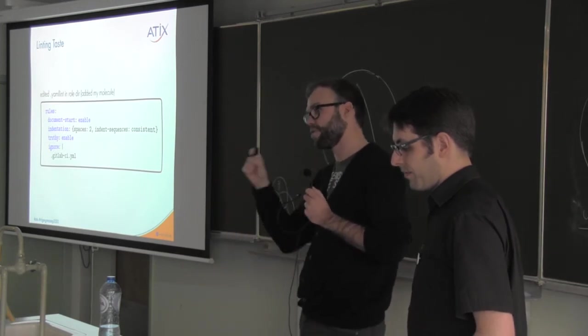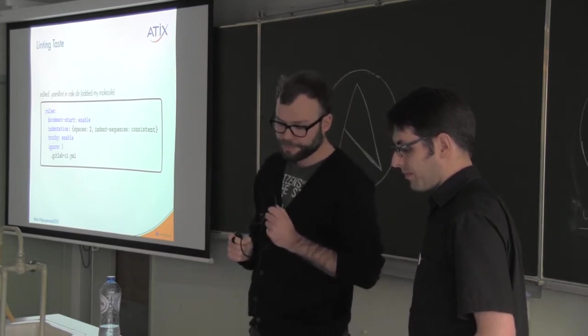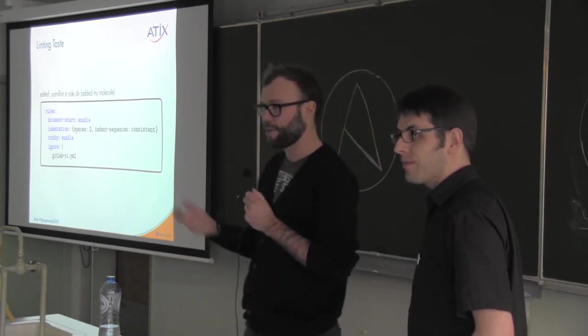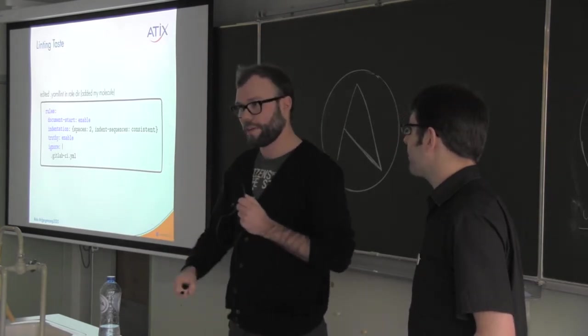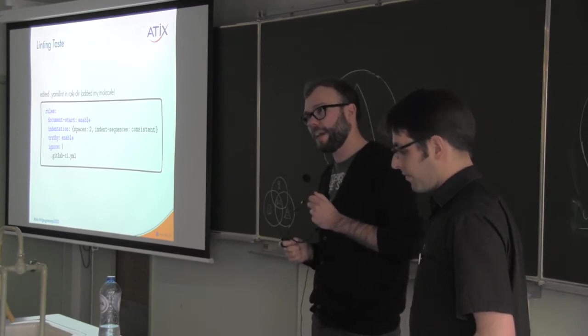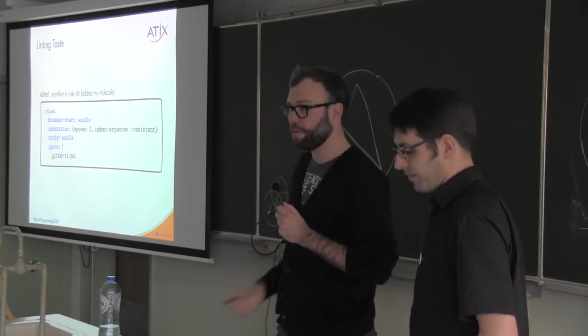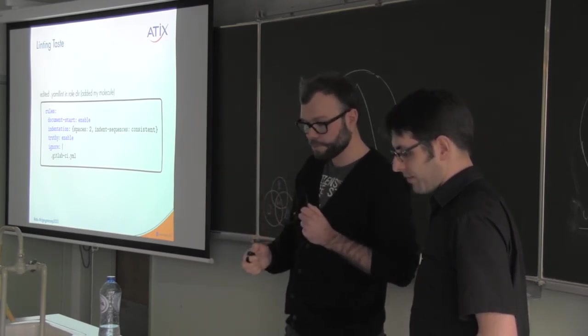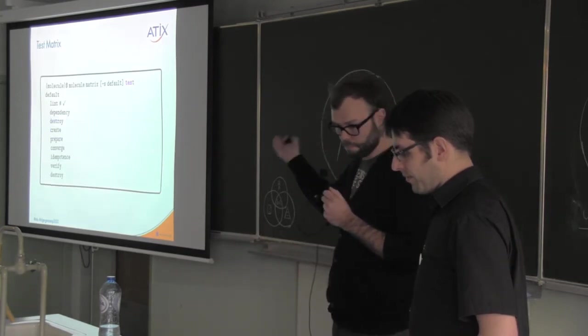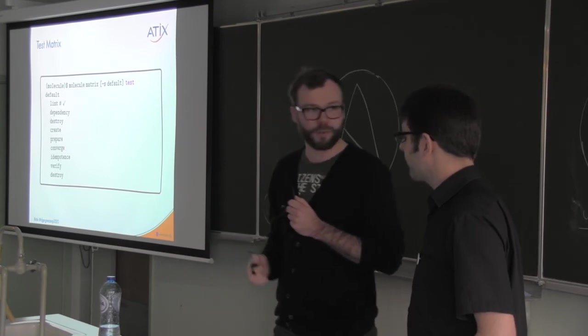Well, the thing we need to do is edit the .yamllint that my molecule installed me by itself. And I can extend here some rules. For example, in my case, I added the enabling for a document start. So, every yaml file has to start with three dashes. Besides that, I want a strict two-space indentation that is consistent. That's the second line here. And I want to enable the truthy theme, which means that only false and true small written will be boolean values. And last but not least, there are some yaml files I actually do not want to be linted. Because they will always fail or annoy me or whatever. In this case, for example, we had a GitLab file. We are heavy users of the GitLab CI CD. And keeping that file according to proper yaml linting is not always easy. So, in this case, we just ignore it.